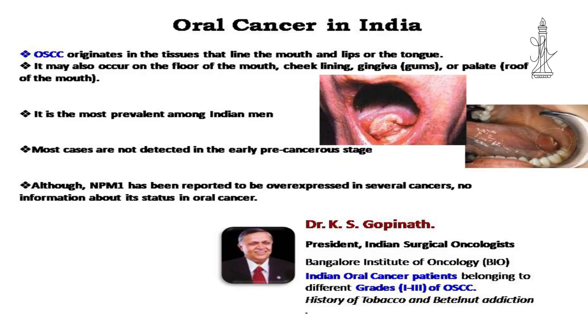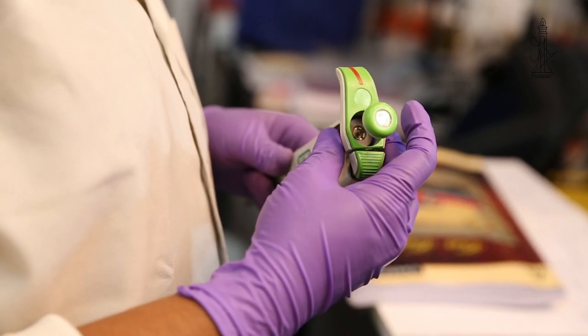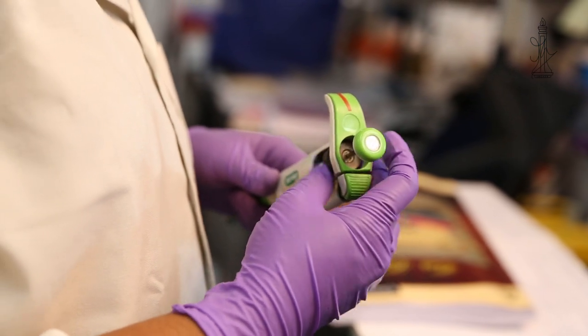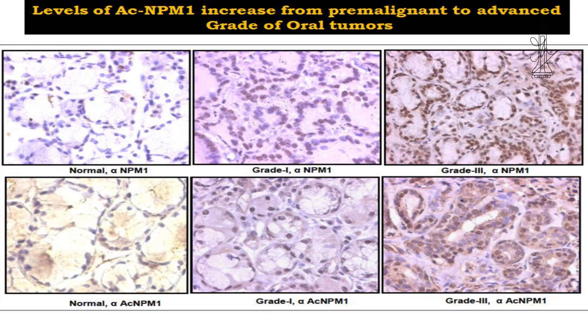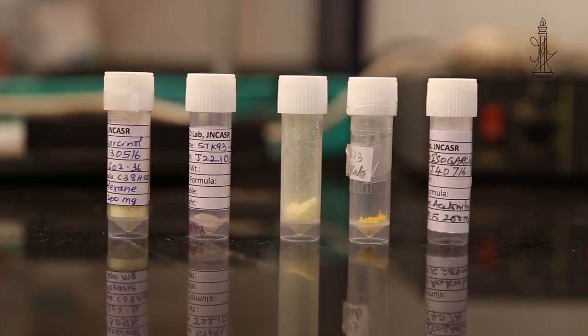At the same time, my lab started working on oral cancer, which is the most fatal cancer for the Indian population. We found that in oral cancer, acetylation is extremely high, and one of the major causes for this hyperacetylation could be NPM1 itself. NPM1 and a couple of other proteins regulating hyperacetylation are a very important factor in oral cancer progression.